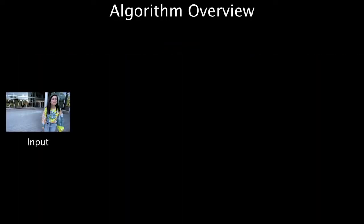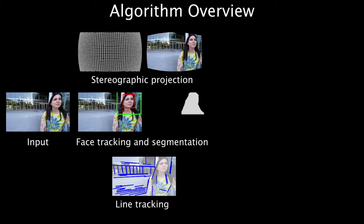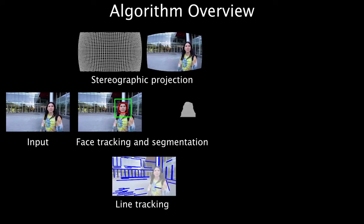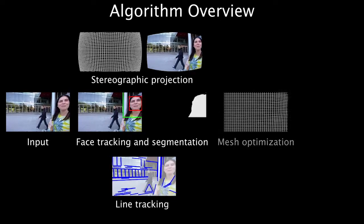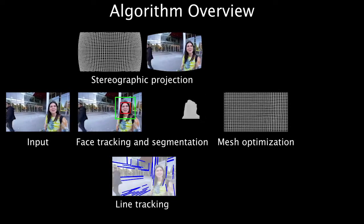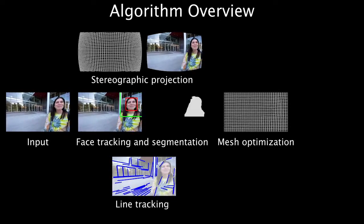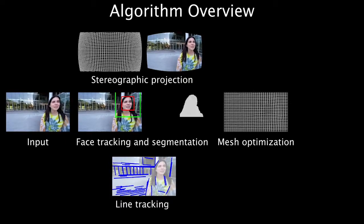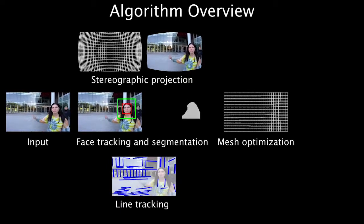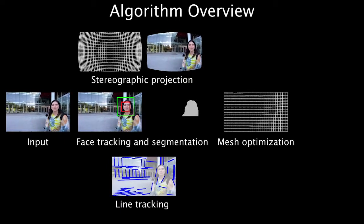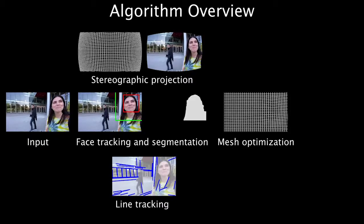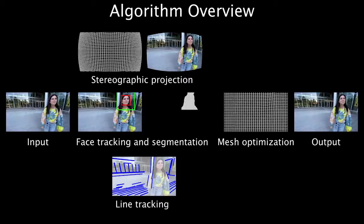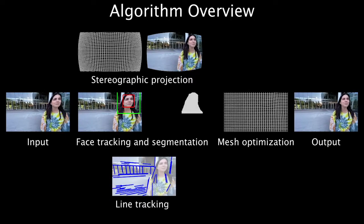Given a wide-angle input video, we first track the subject faces and straight lines across the entire video. We then jointly optimize our spatial and temporal energy terms. The optimal warping meshes locally apply the stereographic projection to the face regions and preserve the straight lines in the background. To generate the output video, we warp the input video using the optimal warping meshes.